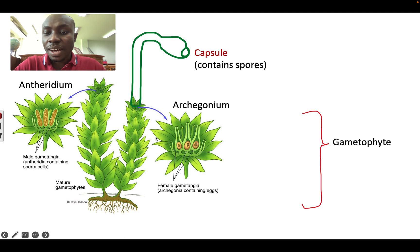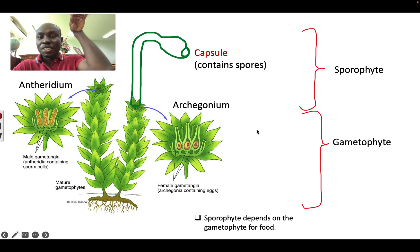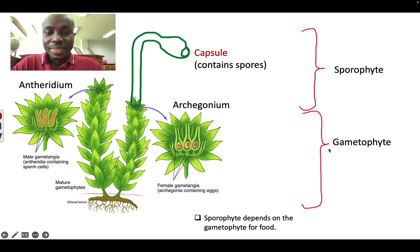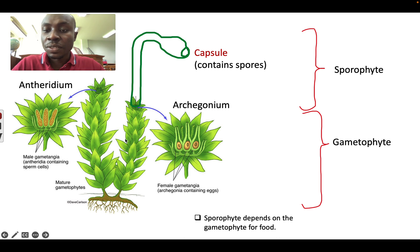We call the green leafy part the gametophyte, and that tall structure is called the sporophyte. There is gametophyte and sporophyte, and the sporophyte depends on the gametophyte for food. The sporophyte needs food and water from the gametophyte — if there is no gametophyte, the sporophyte will die.